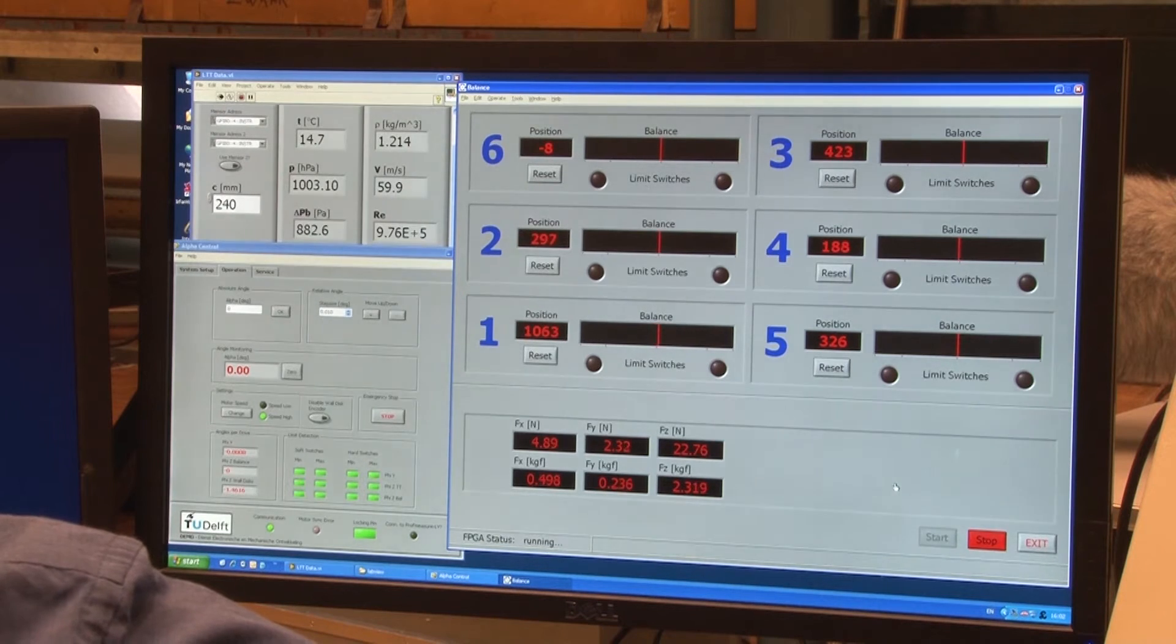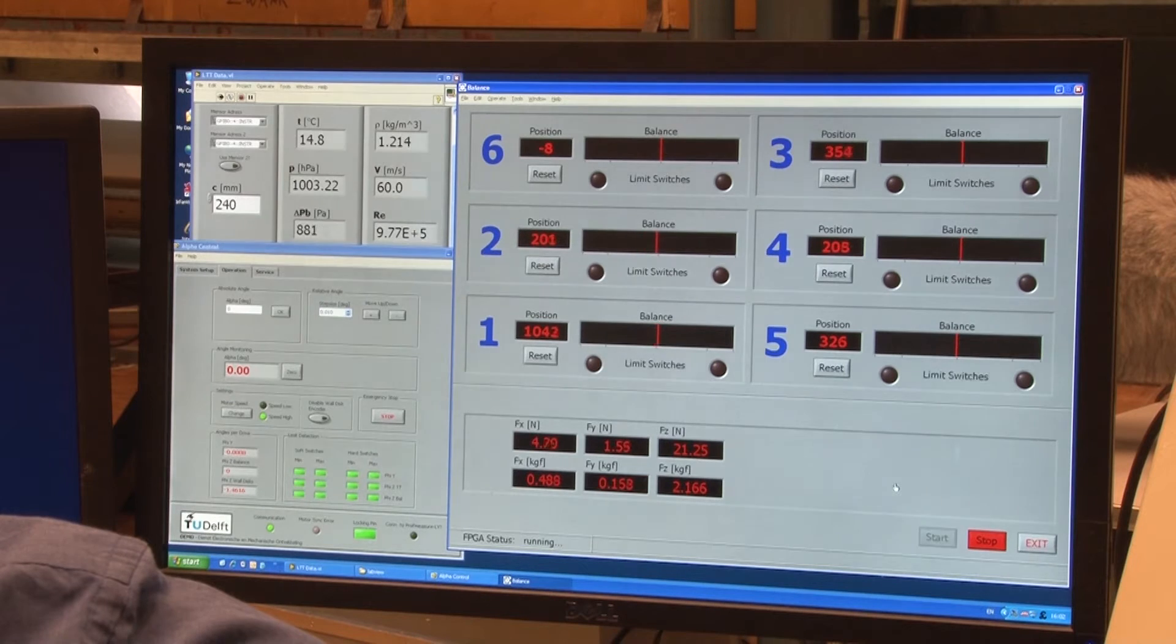The upper left screen shows the tunnel parameters, such as temperature, air density, barometric pressure and wind speed. As you can see, the model has a chord of 240 millimeters.